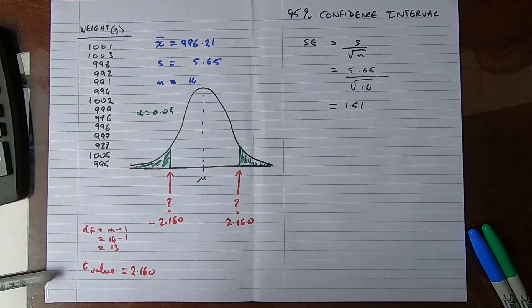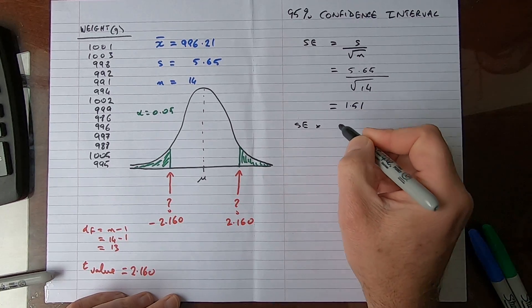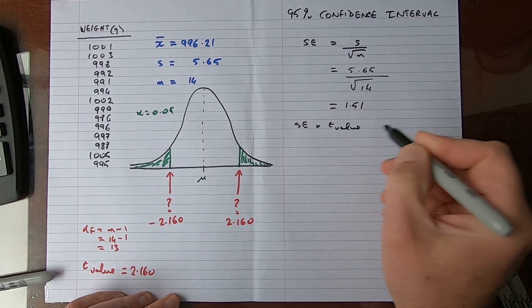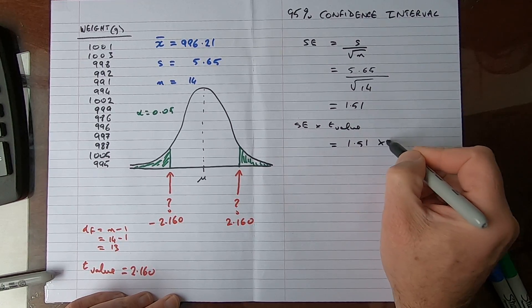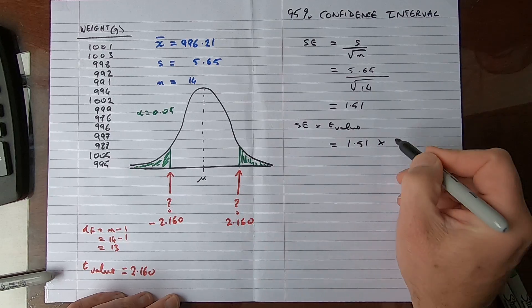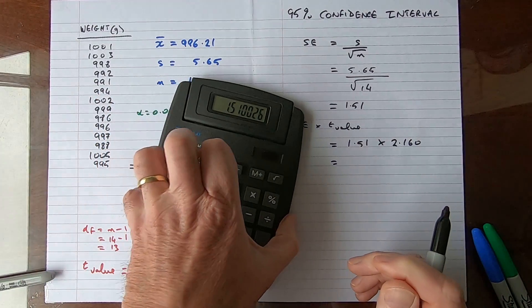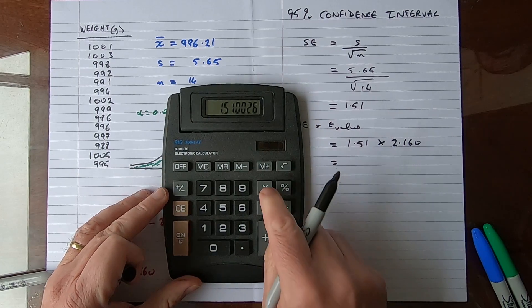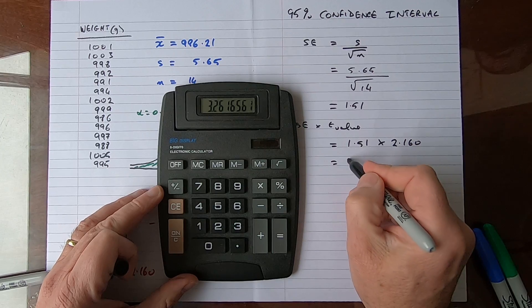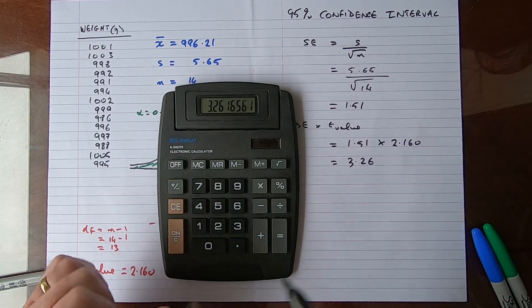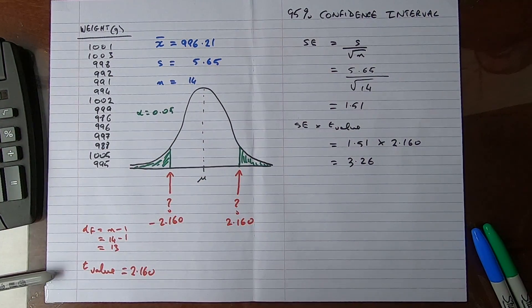Now we've got the standard error, our next job is to multiply our standard error by our t value. That equals 1.51 multiplied by 2.160. Let's work that out: 1.51 times 2.16 equals 3.26.